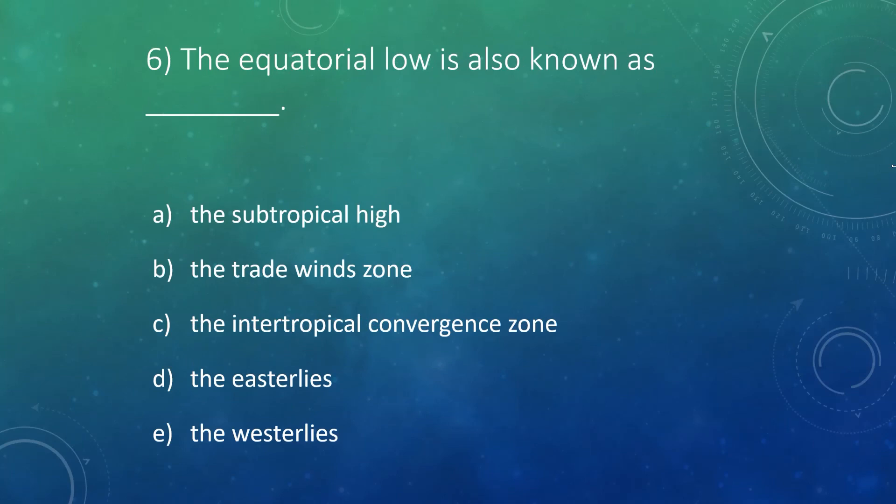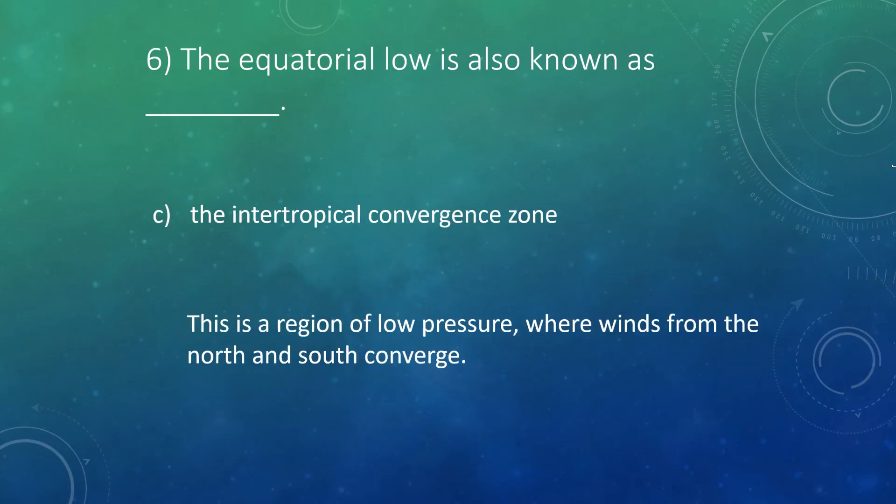Number six, the equatorial low is also known as what? All right, in this case, it is the intertropical convergence zone. So it's equatorial, so it's in the tropics, and it's a low, so air is converging. So it's the intertropical convergence zone.